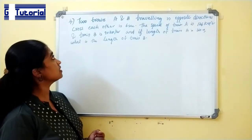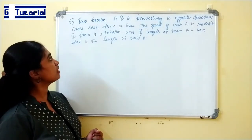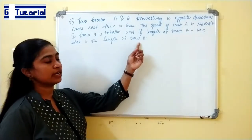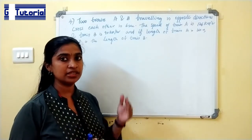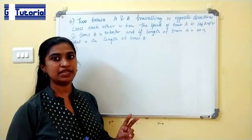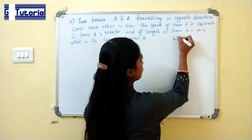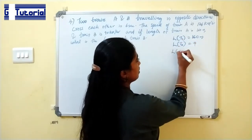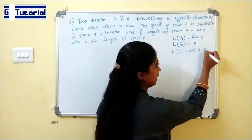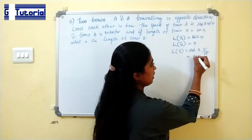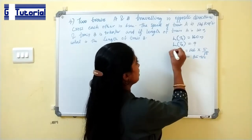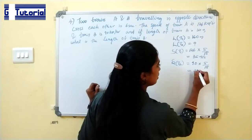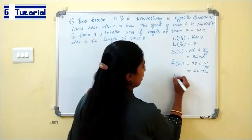Two trains A and B travelling in opposite directions cross each other in 6 seconds. The speed of train A is 126 km per hour and train B is 90 km per hour. The length of train A is 160 meters. What is the length of train B? Speed of train A is 126 × 5/18 = 35 meters per second. Speed of train B is 90 × 5/18 = 25 meters per second.